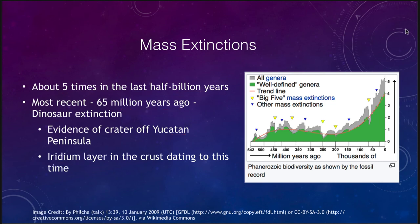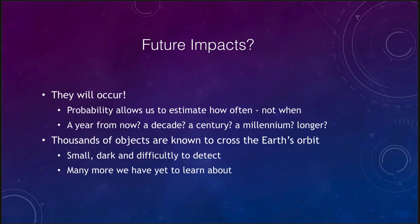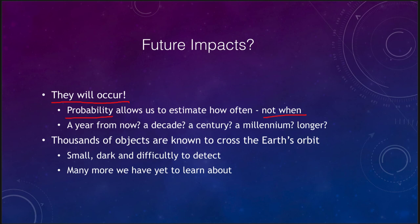What about future impacts? Certainly they will occur. The probability table shows how often these events are likely to hit, though that is no guarantee of exactly when. A probability might suggest impacts every 10,000 years, but you could get two only a thousand years apart and then wait 30 or 40 thousand years for the next one. It is all random — we are only looking at averages. So when will the next large event occur? Is it a decade from now, a century, a millennium, or even longer?